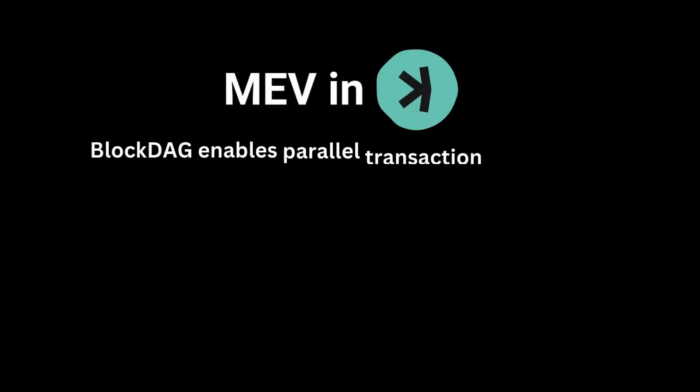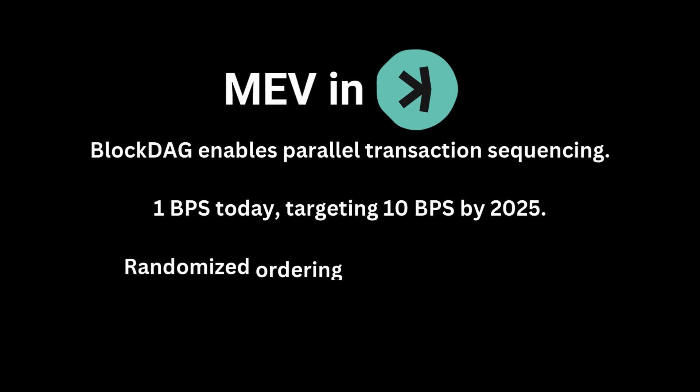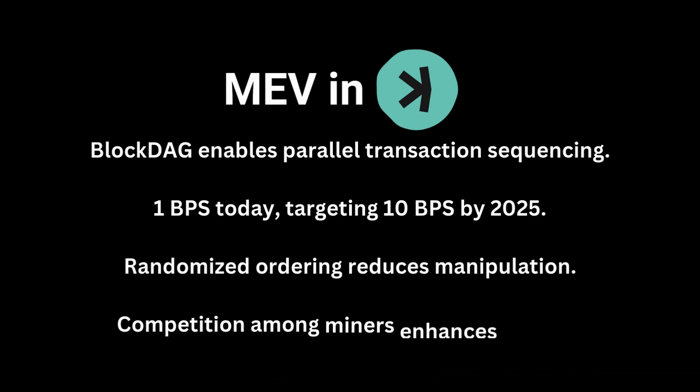Kaspa's blockDAG architecture sets it apart. Parallel block production disrupts traditional MEV strategies, and rapid block times — currently one block per second — reduce the time miners have to exploit MEV opportunities. By fostering competition among miners and randomizing transaction ordering, Kaspa creates a decentralized, fairer environment.